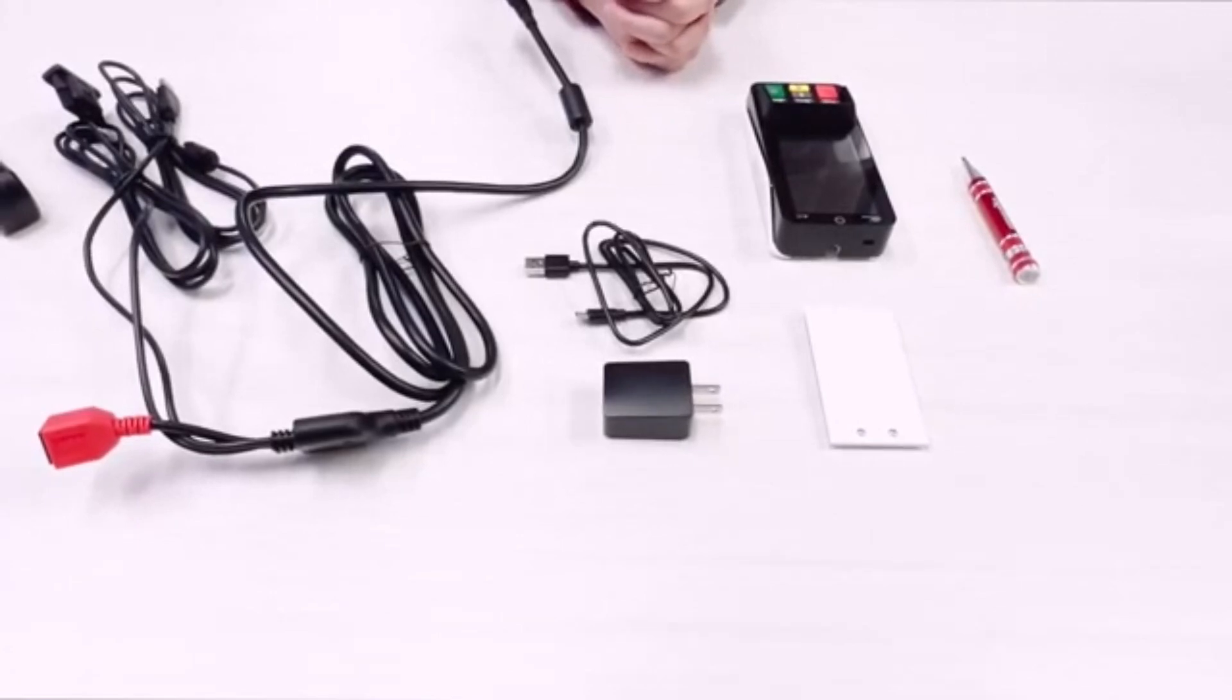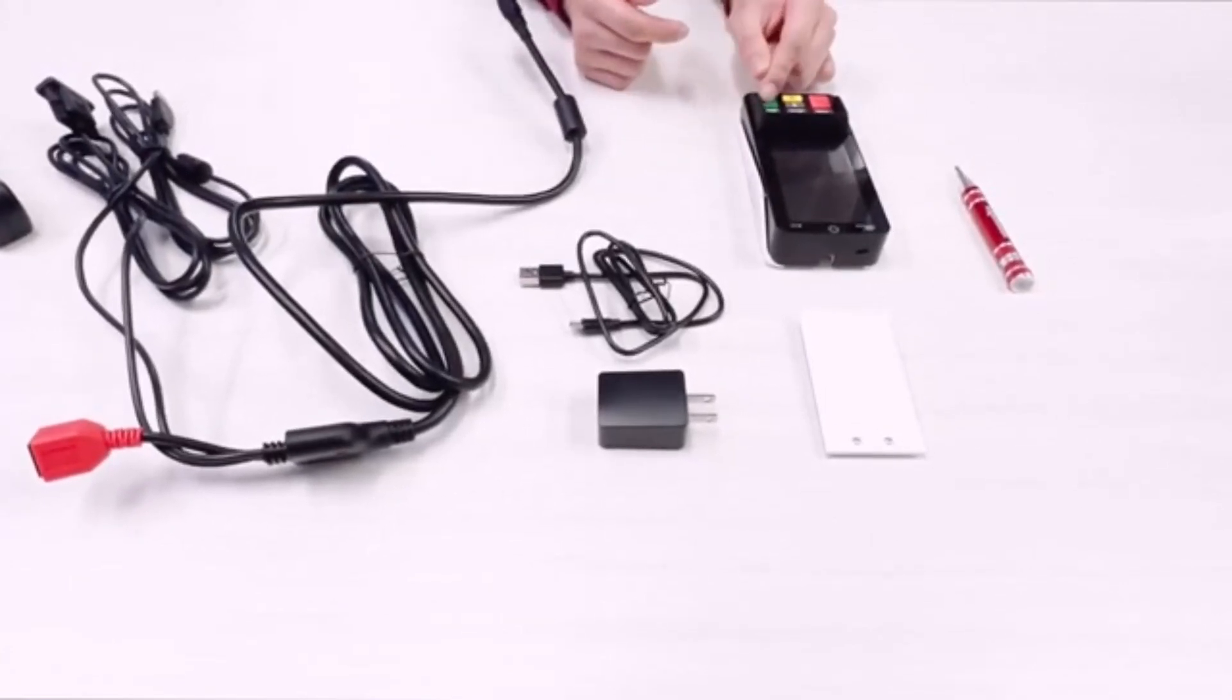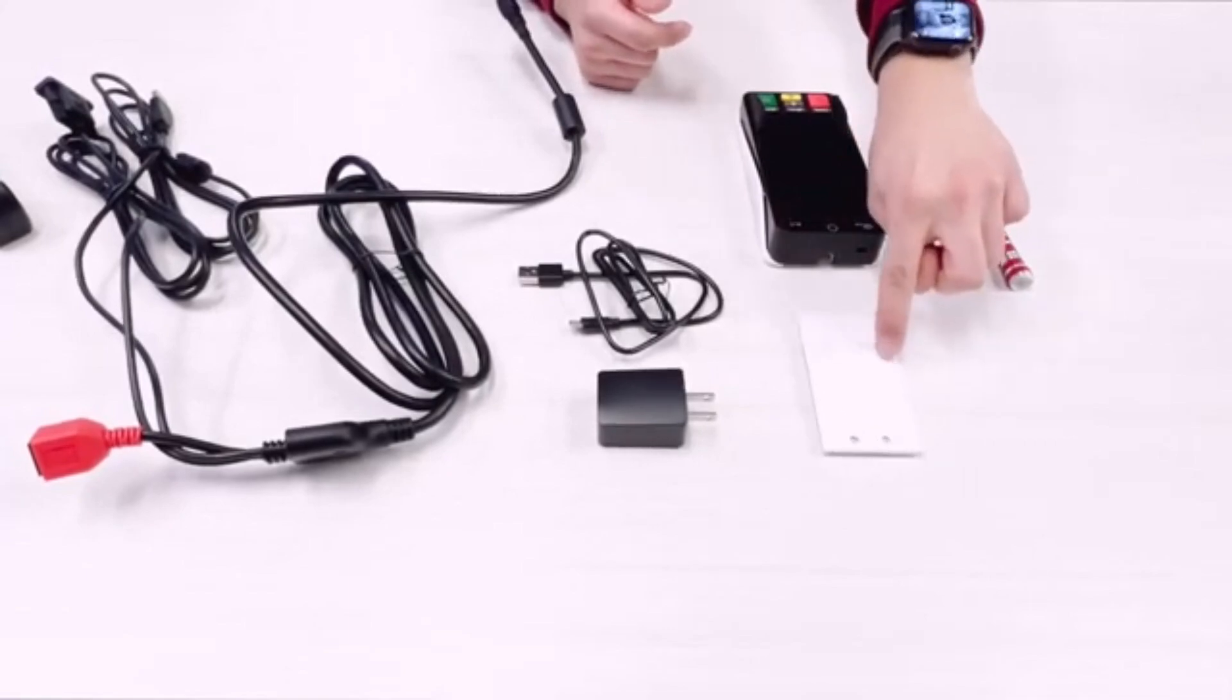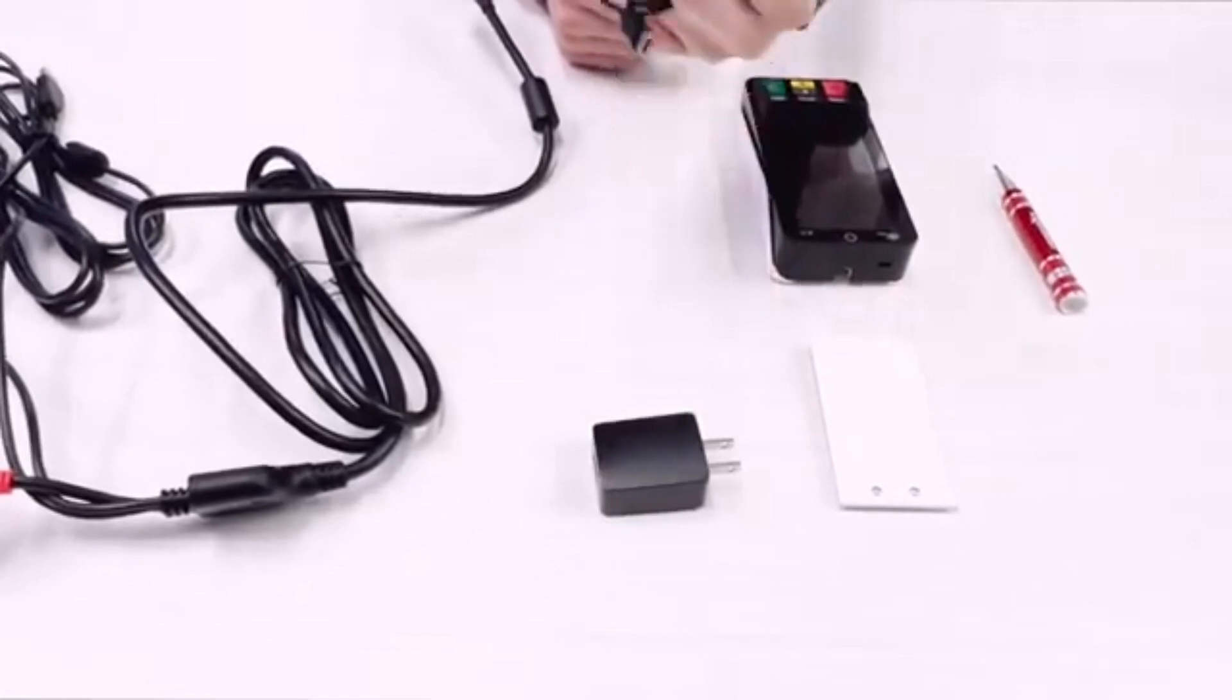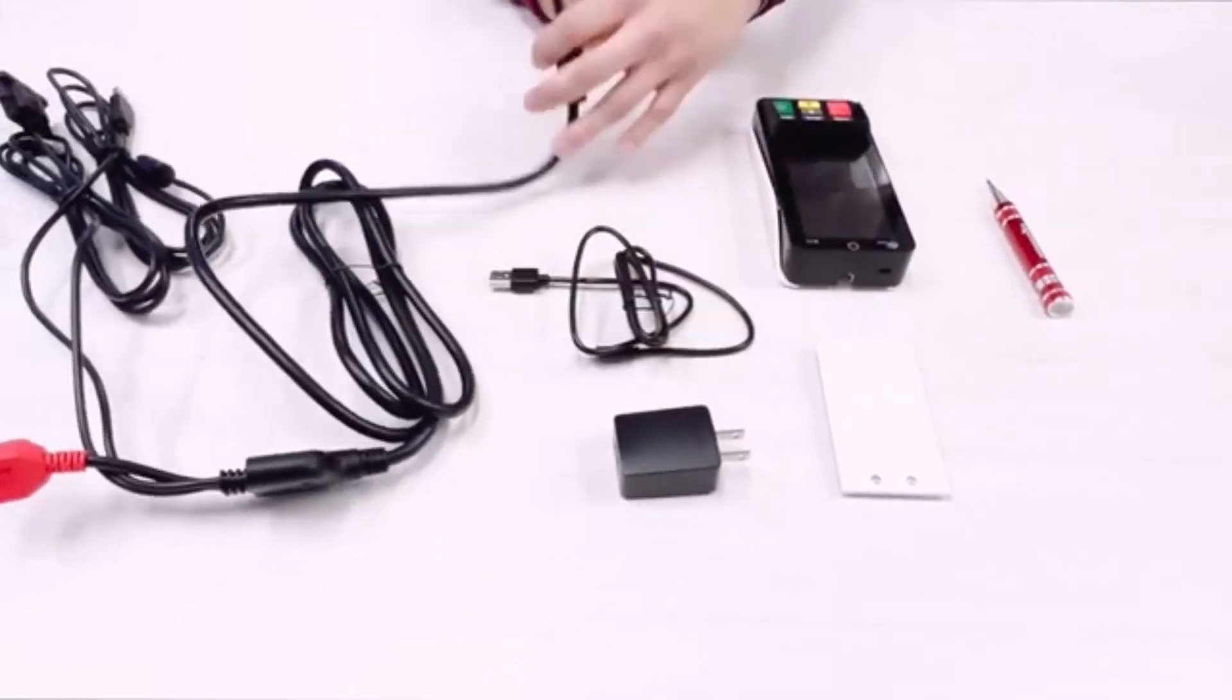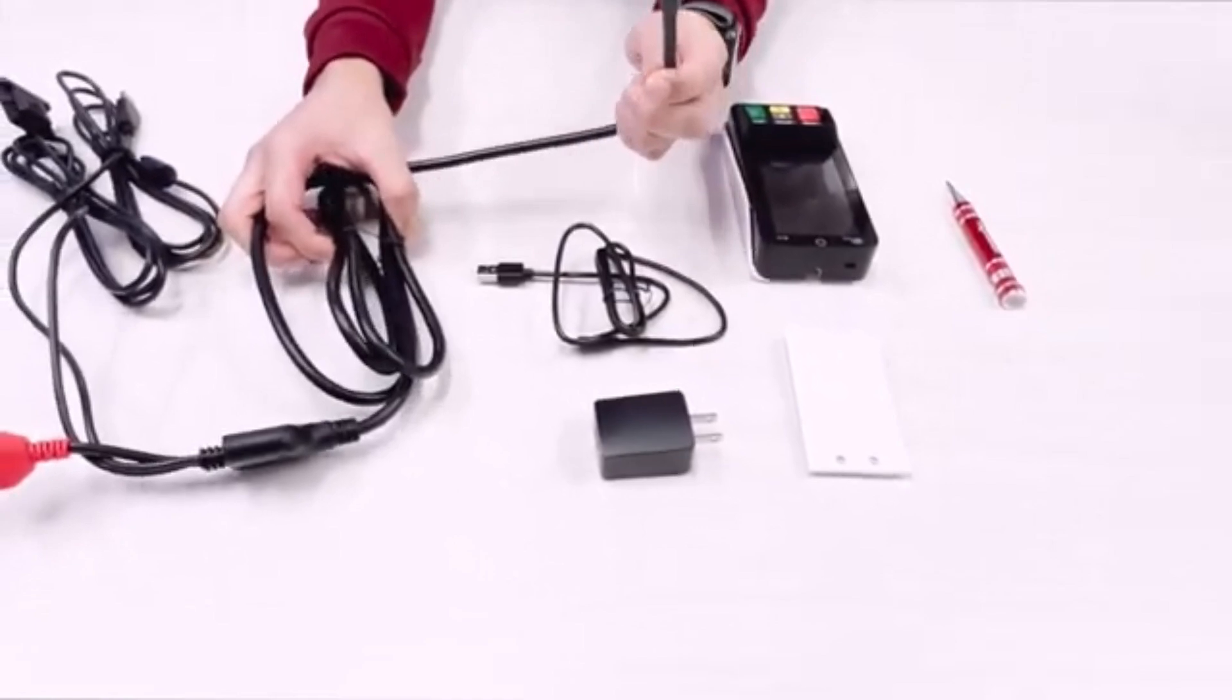Today, as you see here, we have the Pax A35 credit card terminal along with the back plate for it. We also have a power brick here, a USB Type-C cable, and another USB Type-C cable for the main power.